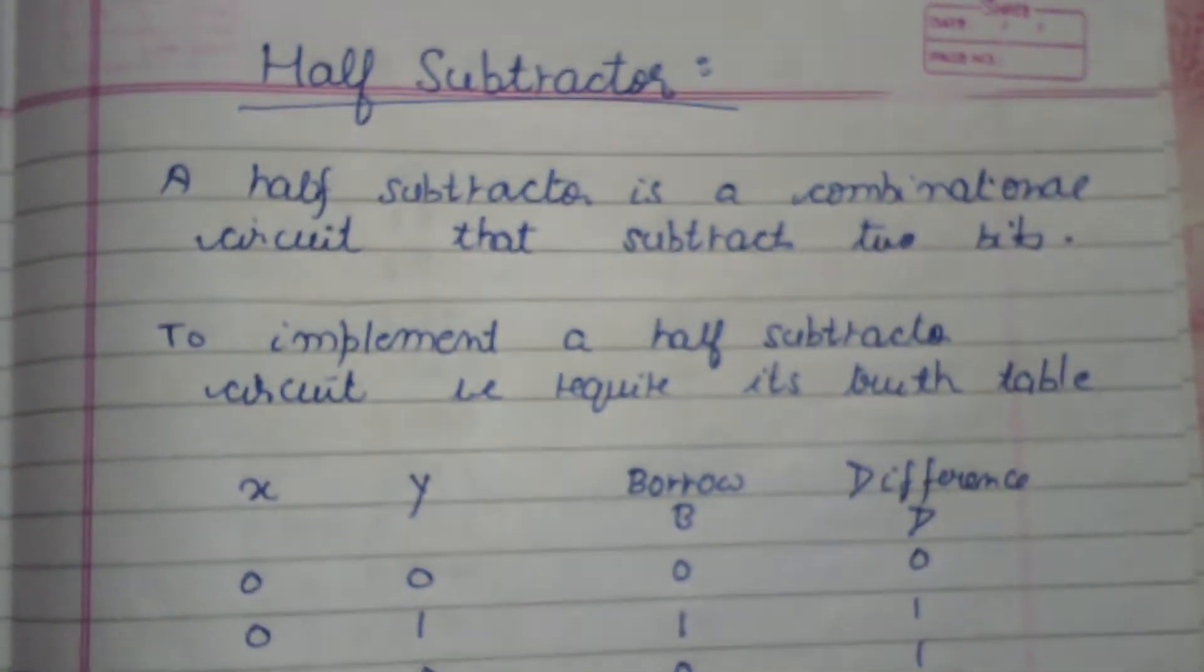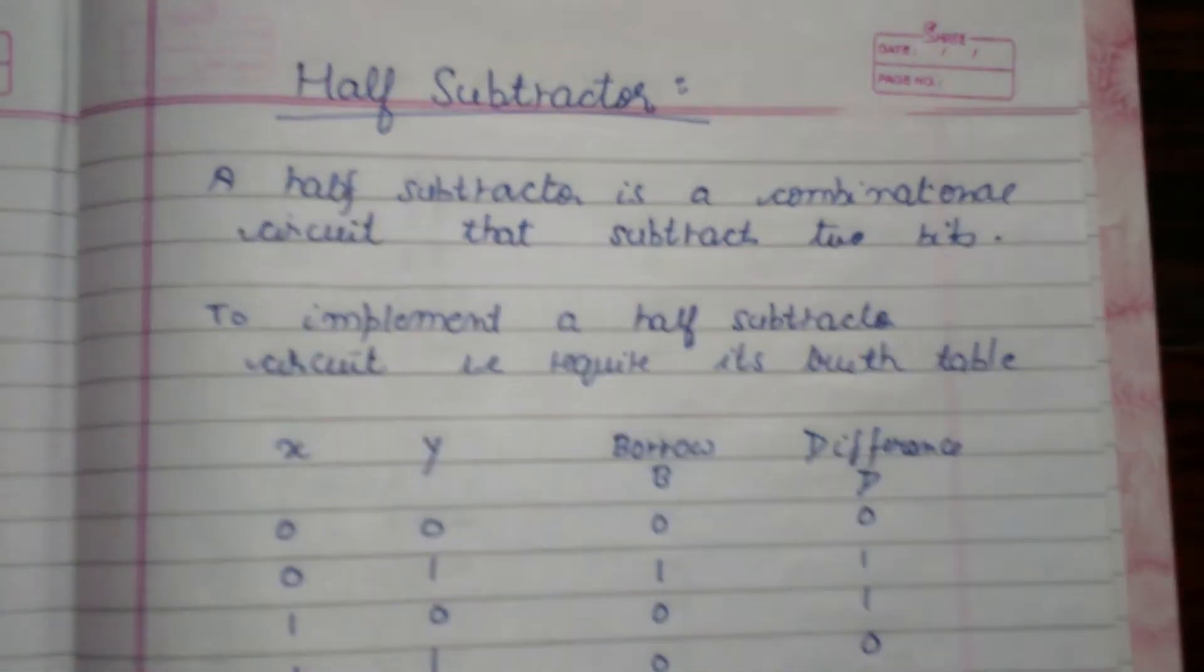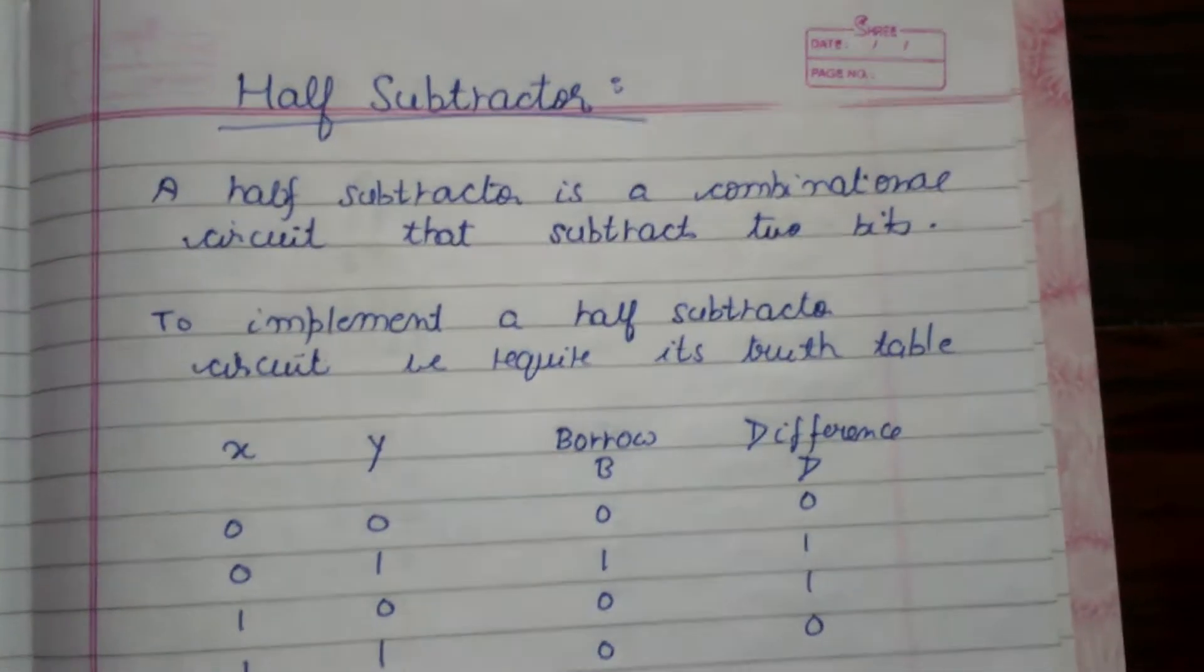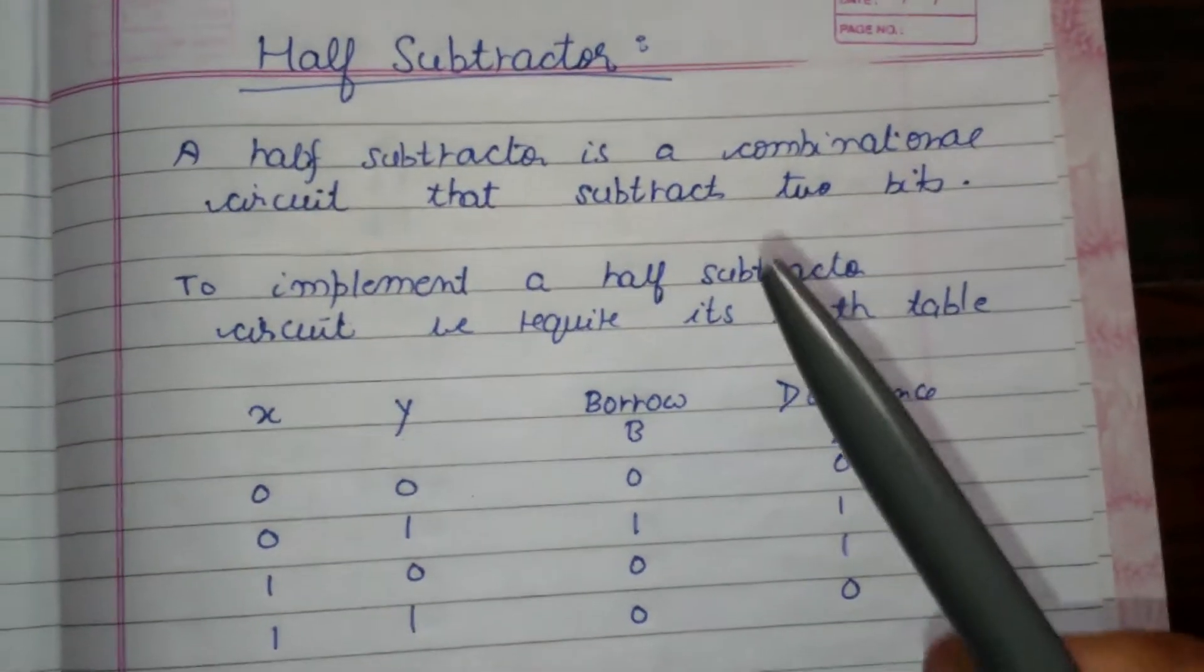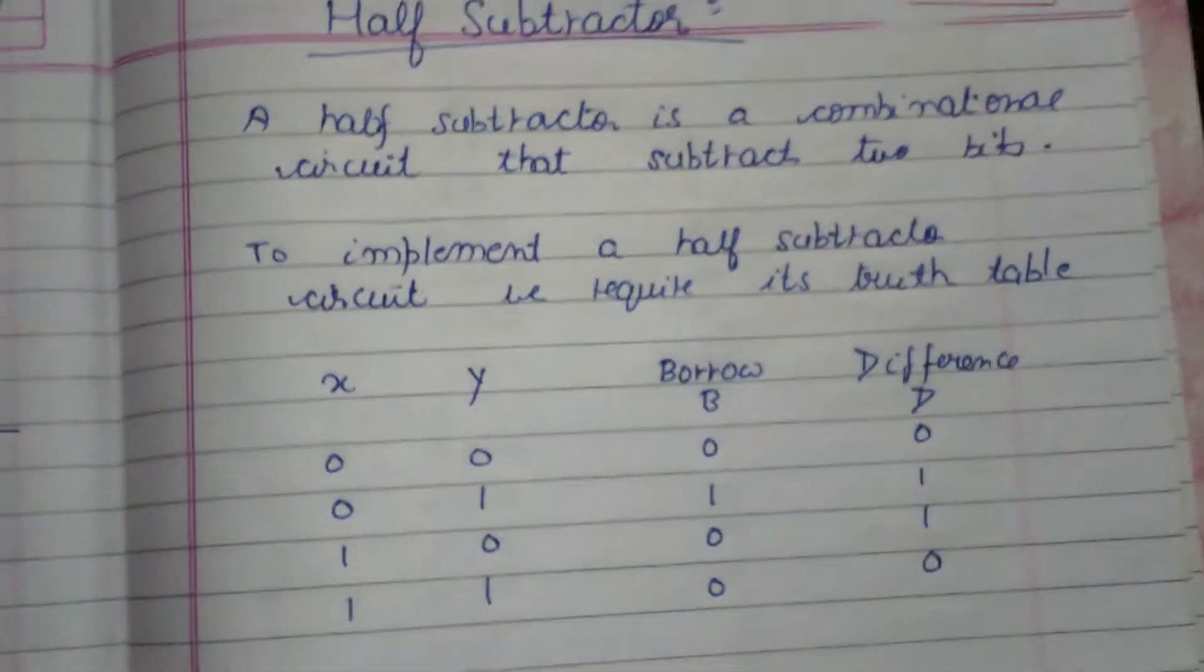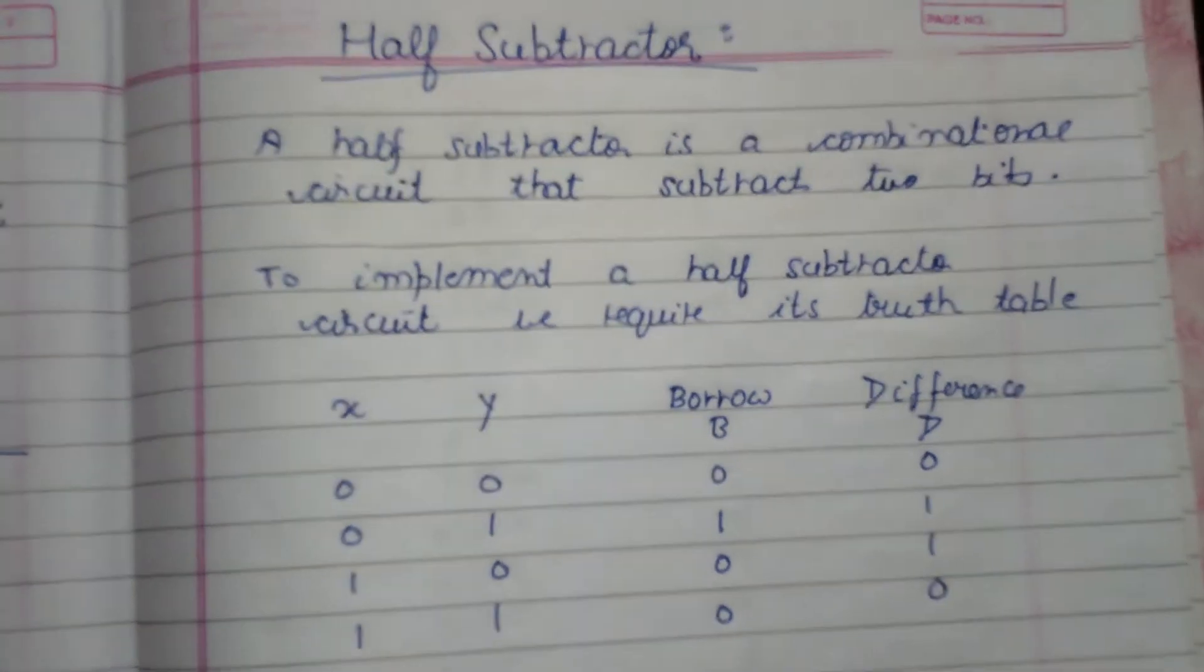Hello everyone, the topic that we're going to study here is half subtractor. So basically, what is a half subtractor and what does it do? A half subtractor is a combination circuit that subtracts two bits. It is basically a circuit that performs subtraction of two bits.